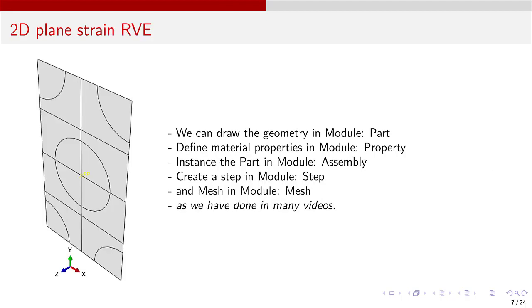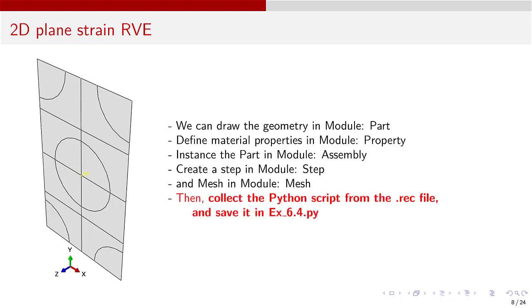Next, we could build the model in CAE in the same way we have done in most videos published so far. But today I want to use a different method — a combination of CAE and Python script. In preparation for this video, I used CAE as usual, stopping along the way to harvest the Python code that CAE writes into the .rec file, and assembling that code into a Python script called EX6.4.py. I will show you the resulting Python script module by module, and show you what it does when I run it in CAE.